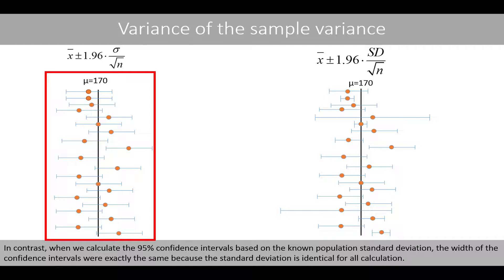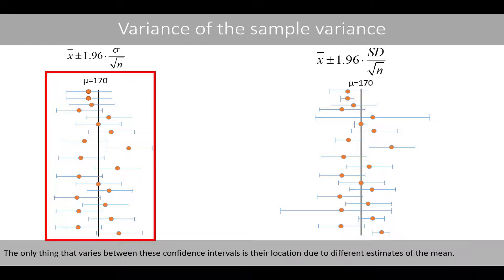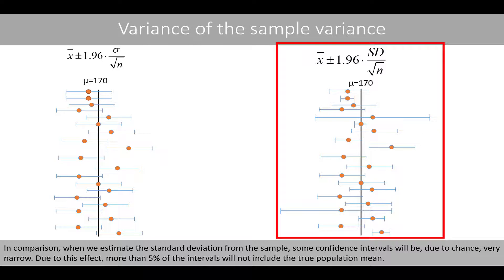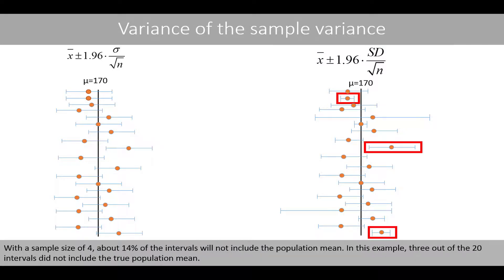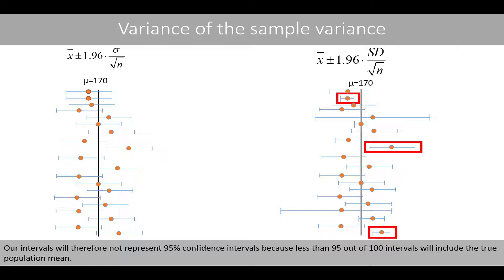Since we have estimated the standard deviation of these confidence intervals, they will vary in length. For example, this confidence interval is very narrow whereas this confidence interval is very wide. In contrast, when we calculate the 95% confidence intervals based on a known population standard deviation, the width of the confidence intervals will be exactly the same because the standard deviation is identical for all calculations. The only thing that varies between these confidence intervals is their location due to different estimates of the mean. When we estimate the standard deviation from the sample, some confidence intervals will be due to chance very narrow. Due to this effect, more than 5% of the intervals will not include the true population mean. With a sample size of 4, about 14% of the intervals will not include the population mean. In this example, 3 out of the 20 intervals did not include the true population mean.